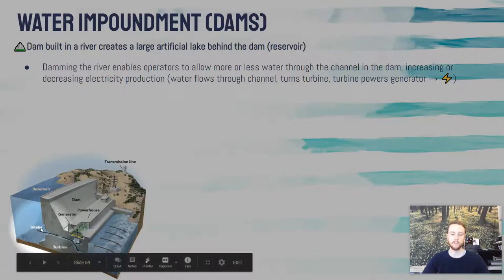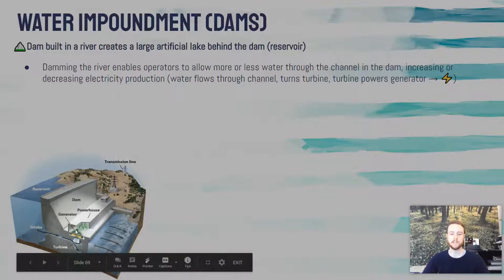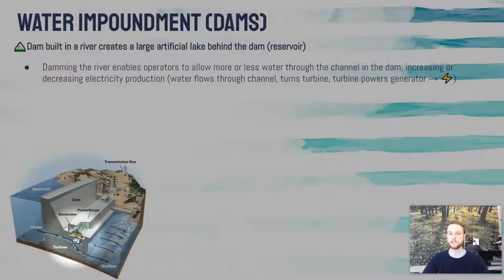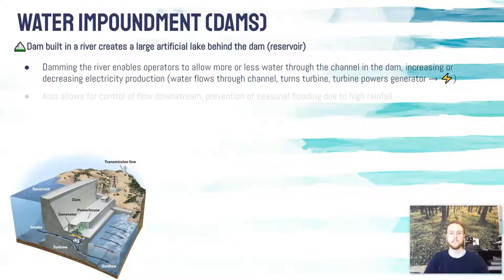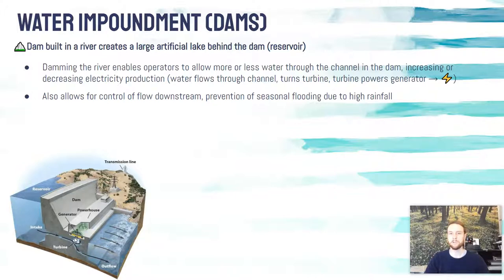At any time, this channel can be opened, water flows through to spin the turbine, which powers the generator to make electricity. It's really important to note that we can control the rate of electricity production by controlling the rate of water that flows through the intake channel. It also allows us to control the flooding that happens in rivers seasonally — snow melt or heavy rains — allowing humans to build settlements closer to the river.